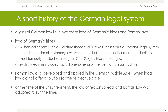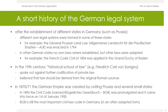With the establishment of different states in Germany, such as Prussia, different own legal systems were formed. For example, the General Prussian Land Law, or in German Allgemeines Landrecht für die Preußischen Staaten, in short ALR, was enacted in 1794 and summarized all applicable laws. The ALR emphasized traditional privileges of the nobility.